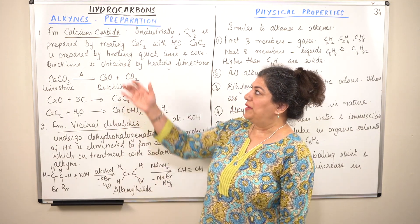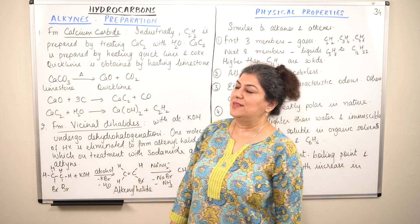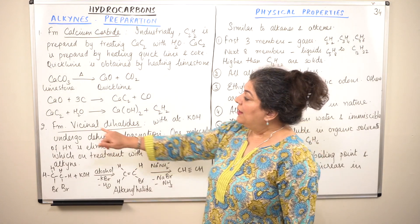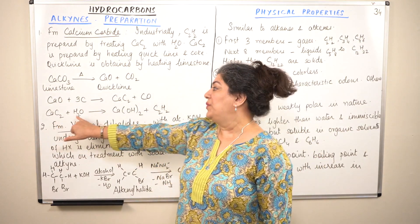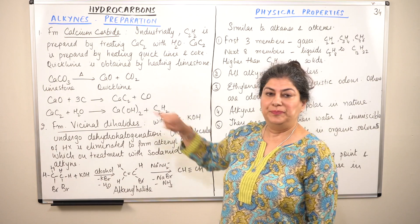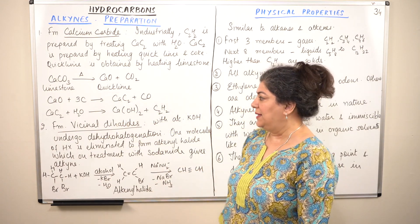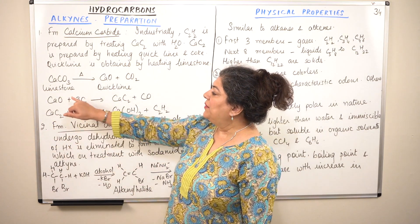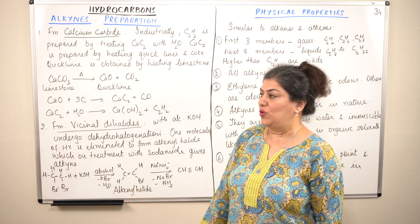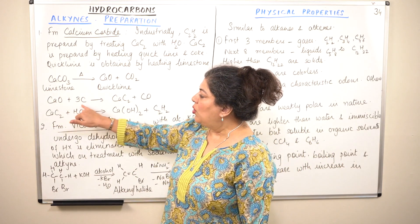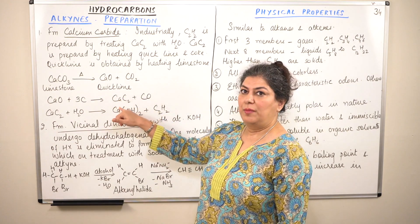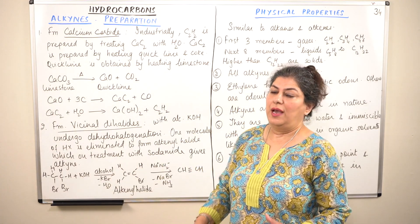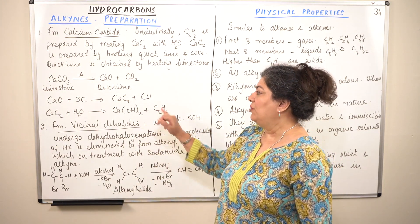Let us come to the first method of preparation — how do we prepare alkynes from calcium carbide. Ethine is prepared from calcium carbide. When calcium carbide is made to react with water, it gives you ethine and also calcium hydroxide. This calcium carbide is prepared by reacting quicklime with carbon or coke. When quicklime and coke react together, it gives you calcium carbide and carbon monoxide, and it is this calcium carbide which is made to react with water to give you ethine.